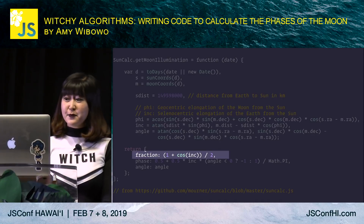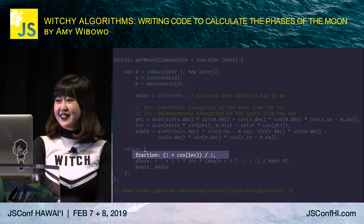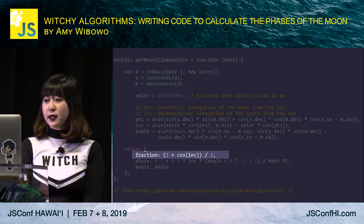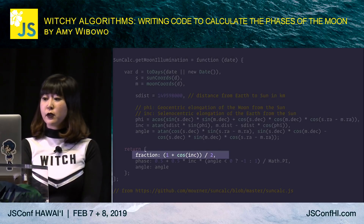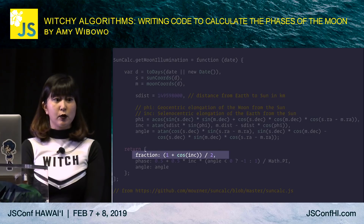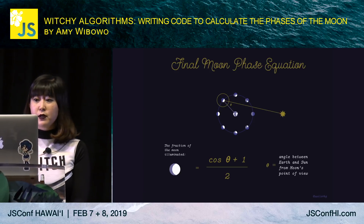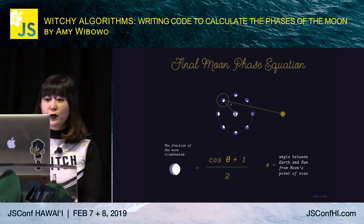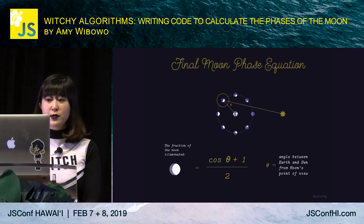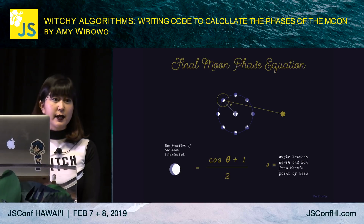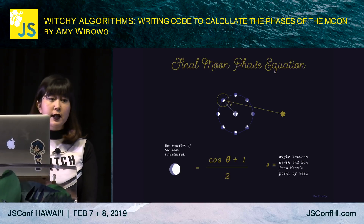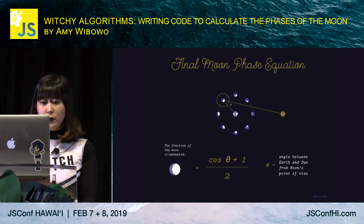Does that look familiar? We did it! From first principles, we calculated the same equation as the library for the fraction of the moon that's illuminated. To recap: the fraction of the moon illuminated at any point in time can be calculated as (cosine theta + 1) / 2, where theta is the angle between the earth and the sun from the moon's point of view.